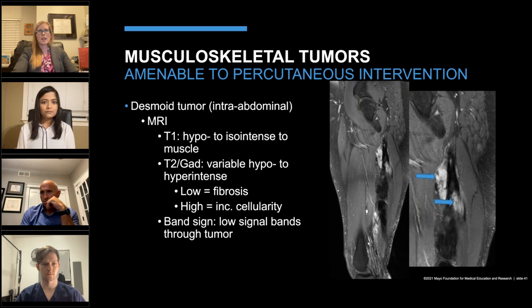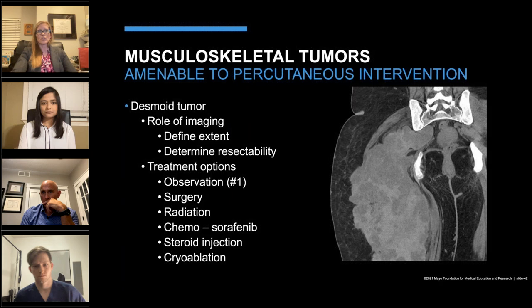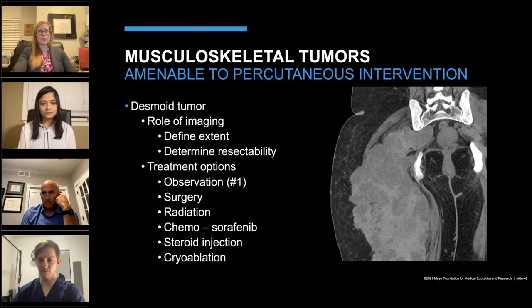The role of imaging for tumor evaluation is not only to characterize the tumor but also to define its extent and determine whether it is surgically resectable or better suited for other methods of treatment. For desmoid tumor, which is benign, there are multiple treatment options. Just like with osteoid osteoma, these can sometimes spontaneously regress, so observation is usually attempted at least for a while unless the tumor is extremely symptomatic. Other options include surgery, radiation, chemotherapy with sorafenib, and cryoablation, which radiologists can perform as an intervention. Dr. Kallstrom will speak about cryoablation in desmoid tumors specifically.